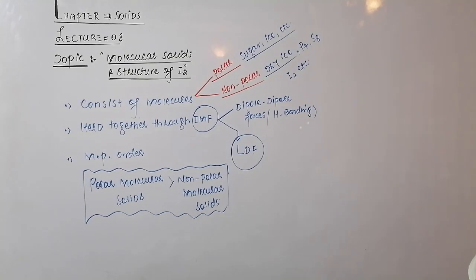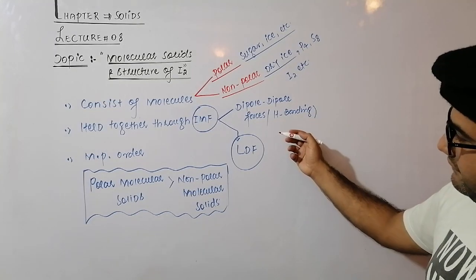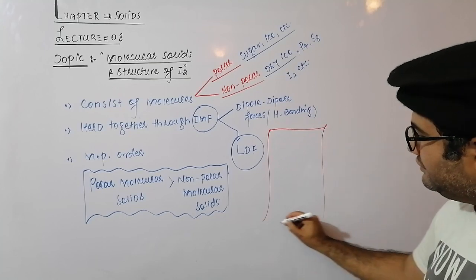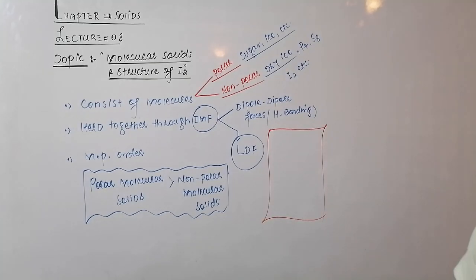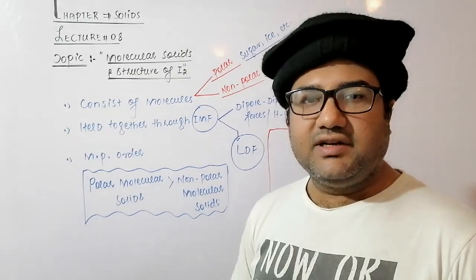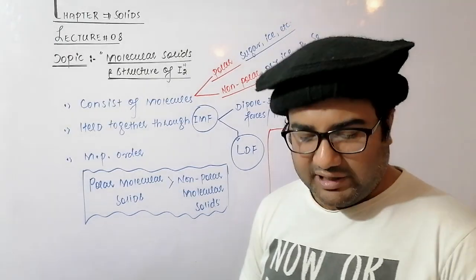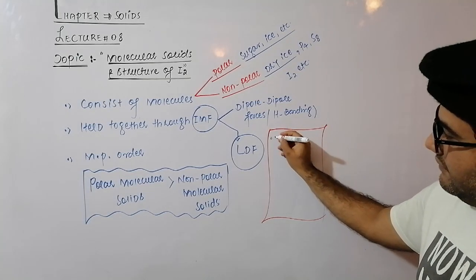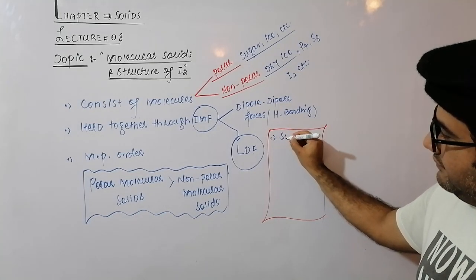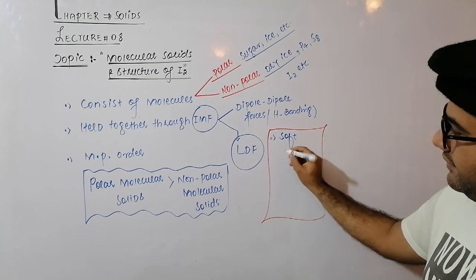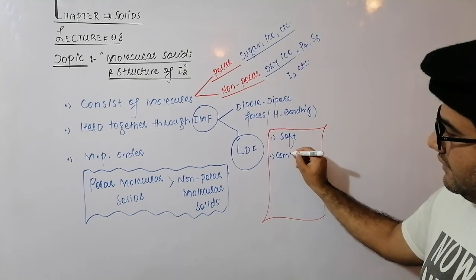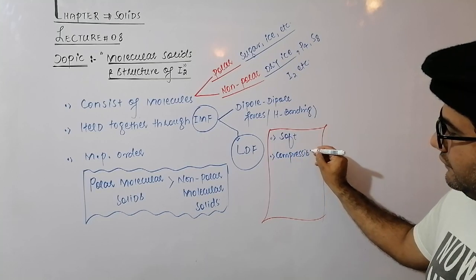Molecular solids have some characteristic features specific to molecular solids only, which distinguish them from ionic and covalent solids. First, they are relatively soft. Second, they are relatively easily compressible.